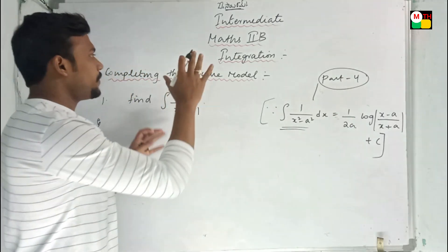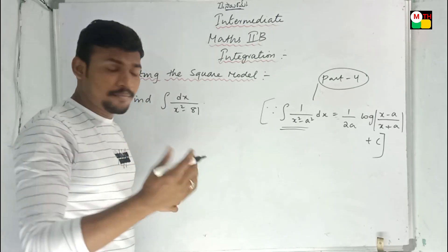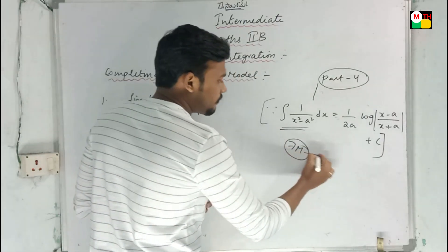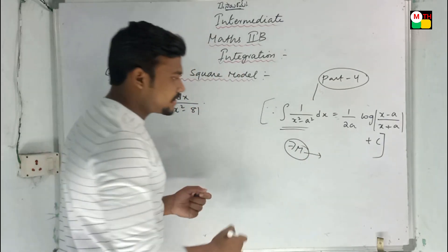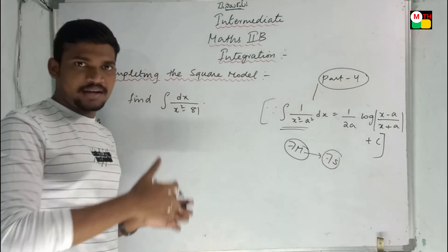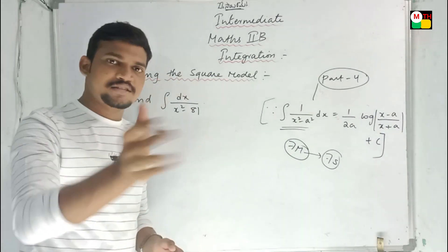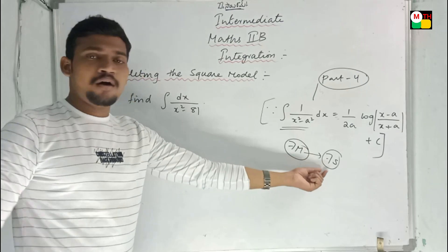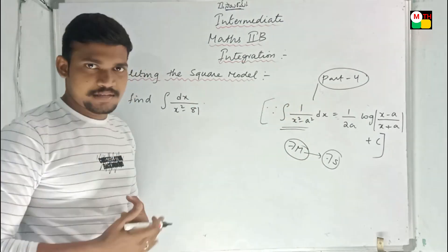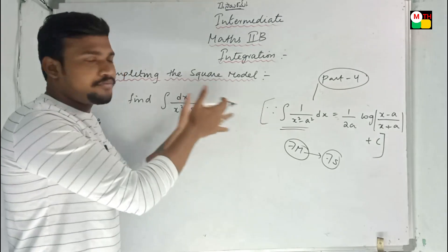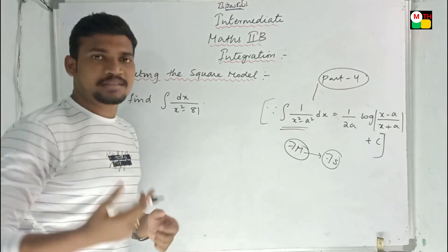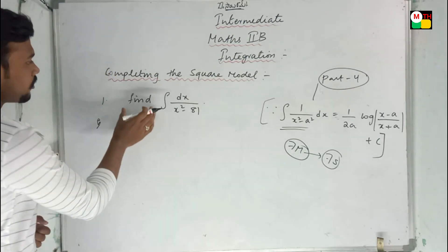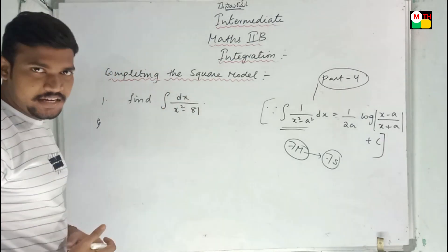This is not a completing-square mode, so there are 7-mark questions that are important in this case. The 7-mark questions are of the same type. What is the present part 5 covering? Maybe in part 7 we will start those. We will start the 7-mark questions. So now, find the integral: dx / (x² − 81).